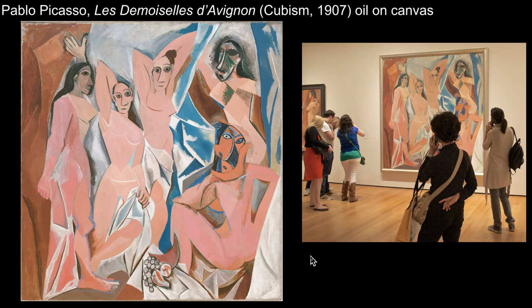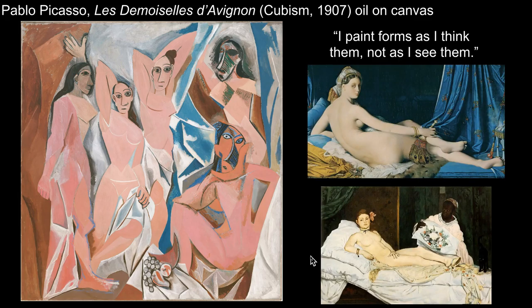Picasso's Les Demoiselles d'Avignon from 1907 wreaked havoc on the conventions of Western art. Picasso depicts a group of prostitutes in Barcelona. Over a period of seven months and dozens of sketches, Picasso worked out how to depict the bodies and still life shown in this space. He takes this common subject—the female form, the sexually available woman—and fractures the shapes of the women, showing both their 2D and 3D character, breaking the bodies into planes as if seeing them from many angles. Picasso eventually stated, 'I paint forms as I think them, not as I see them.'